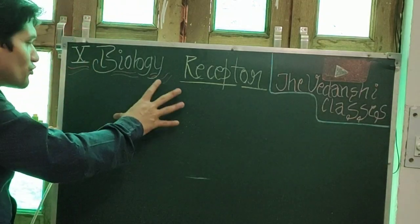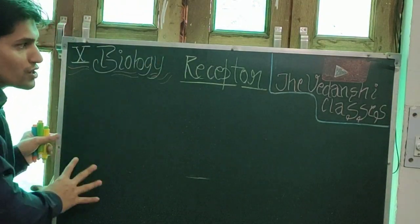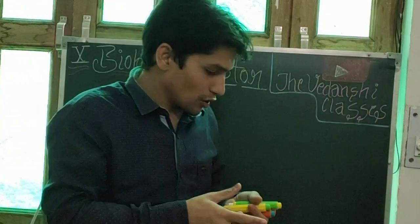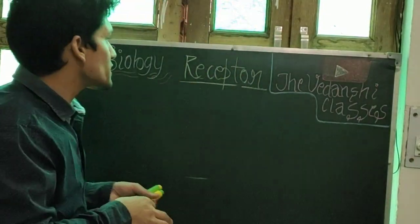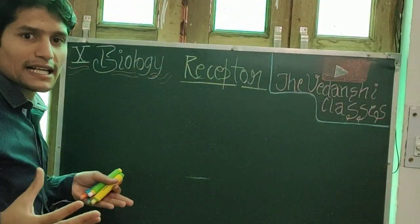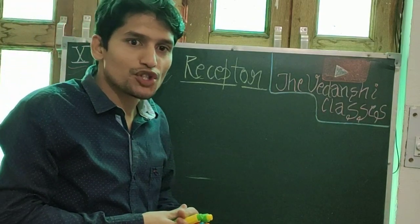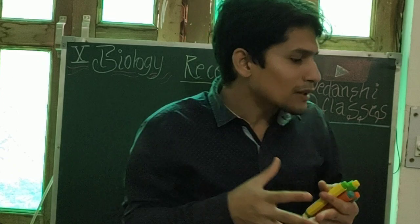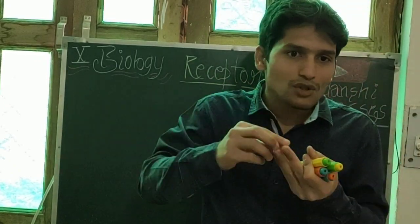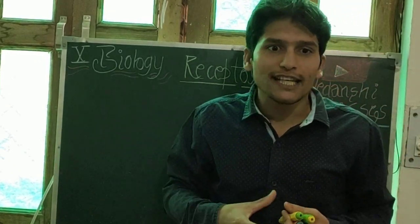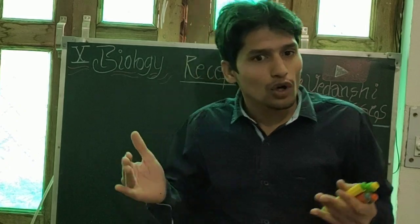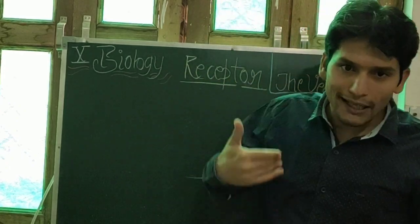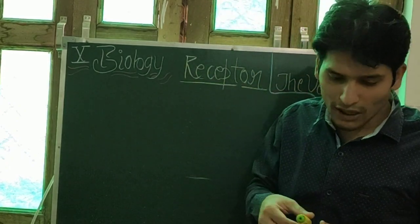Till now we've discussed neurons, brain, and spinal cord. Today we're discussing receptors and the mechanism of neurotransmission in nervous coordination. Both nervous coordination and chemical coordination take place simultaneously. Now I'll give you an example so you can understand well.